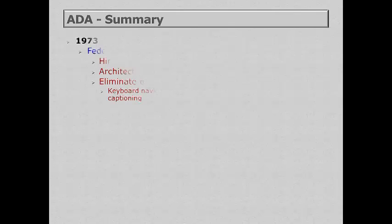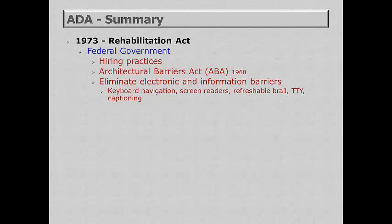A brief summary of the ADA. It actually is rooted in the Rehab Act of 1973. The Rehab Act focused on the federal government — its hiring practices for people with disabilities, the removal of physical barriers, as well as electronic and information barriers.